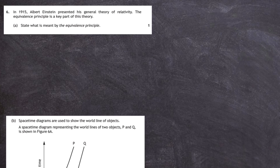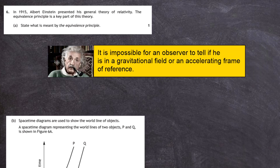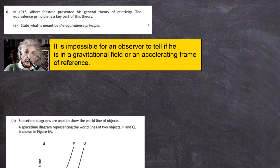Question 6 from the 2019 Advanced Higher Physical Examination from the SQA. In 1915, Albert Einstein presented his general theory of relativity. The equivalence principle is a key part of this theory, and for one mark we're asked to state what is meant by the equivalence principle. According to Einstein, it is impossible for an observer to tell if he or she is in a gravitational field or an accelerating frame of reference.